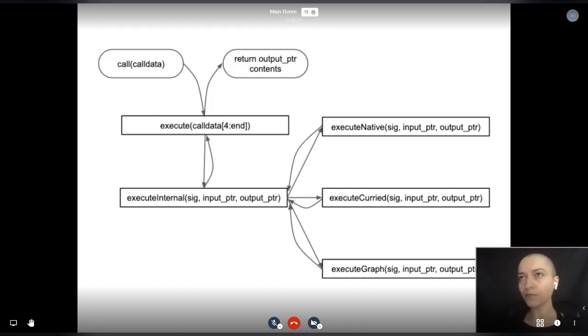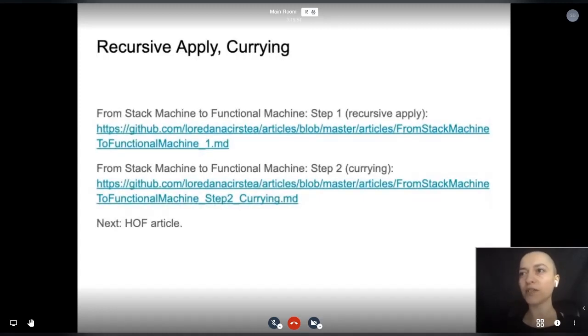Virtual curried functions are handled by execute curried, which retrieves the data from a pointer in memory. The pointer is also the curried function signature. The interpreted flavor of Taylor version one is significantly more complex than my article example. Stored graphs for types are handled by the execute graph function. We also have support for named and sized types. These are links to my recent articles on how recursive apply and currying works as prerequisite reading for this talk.